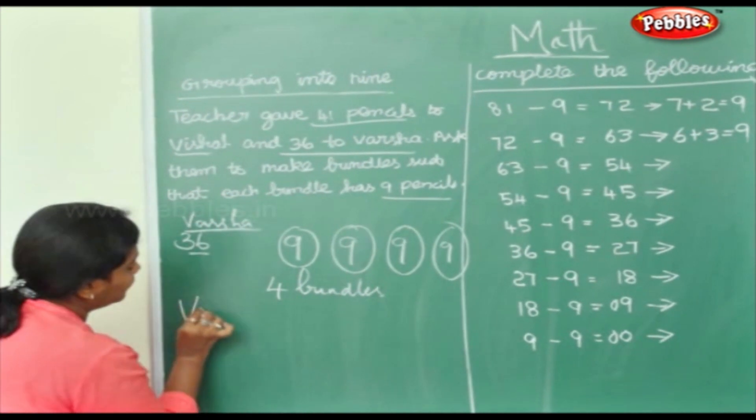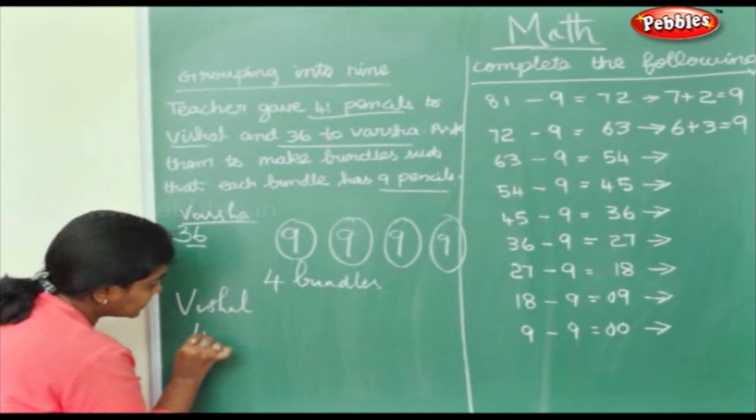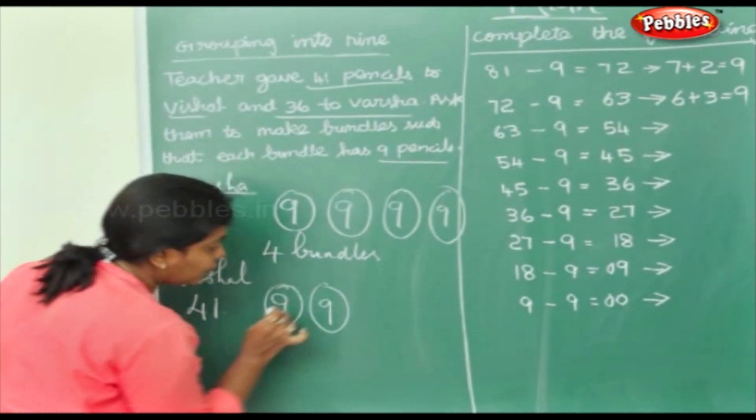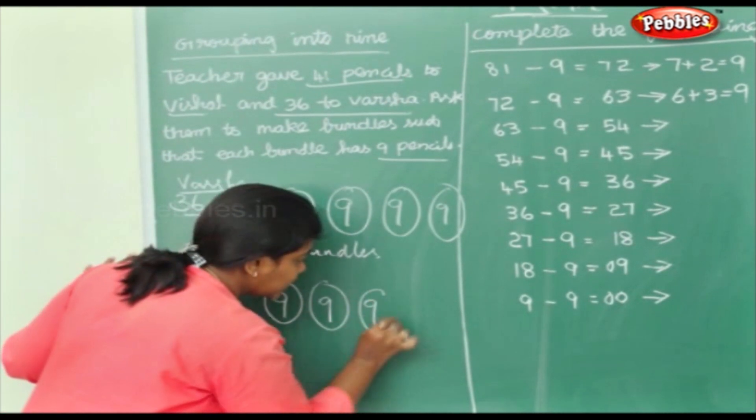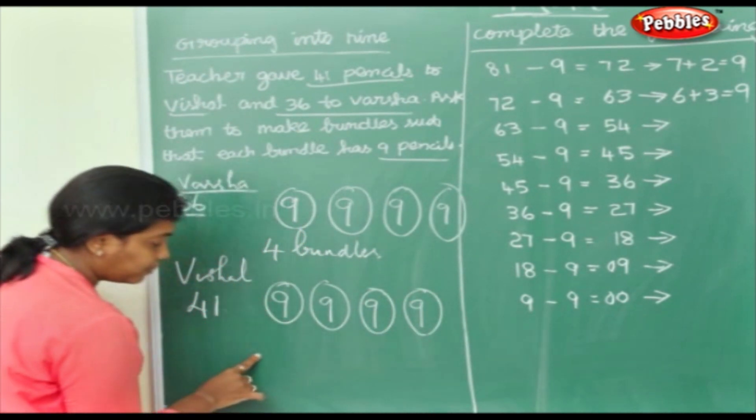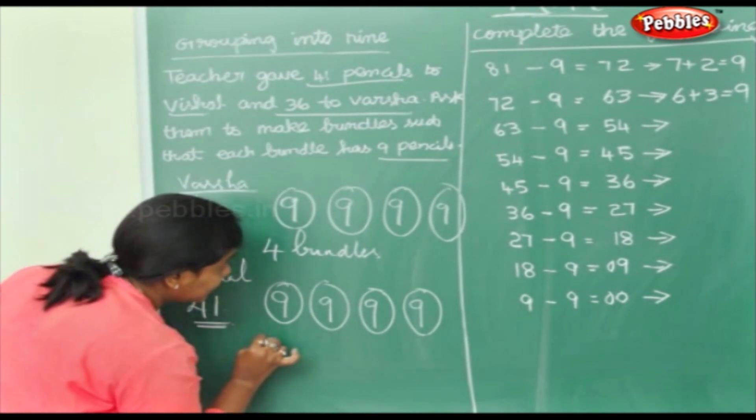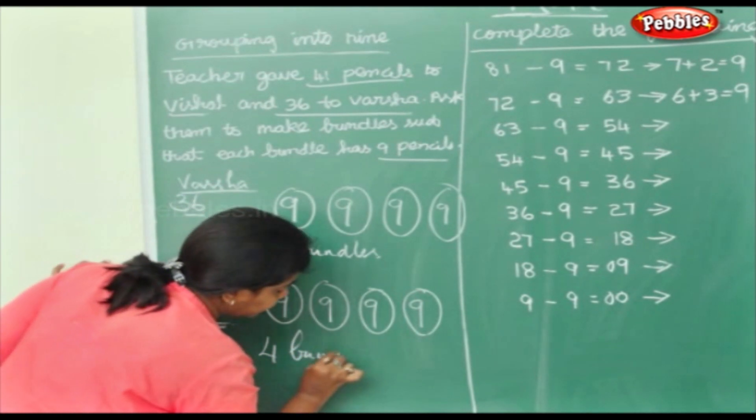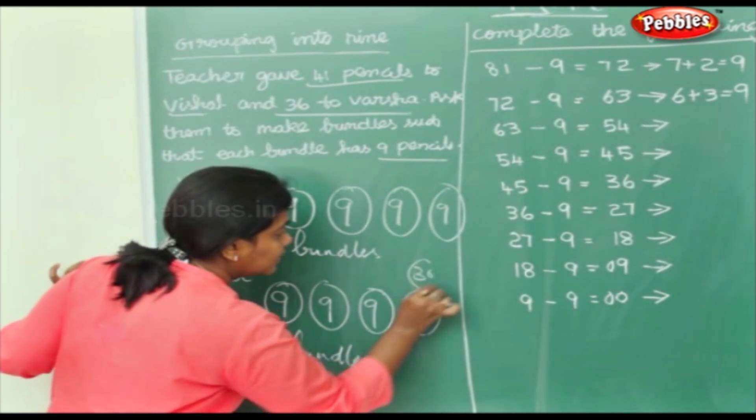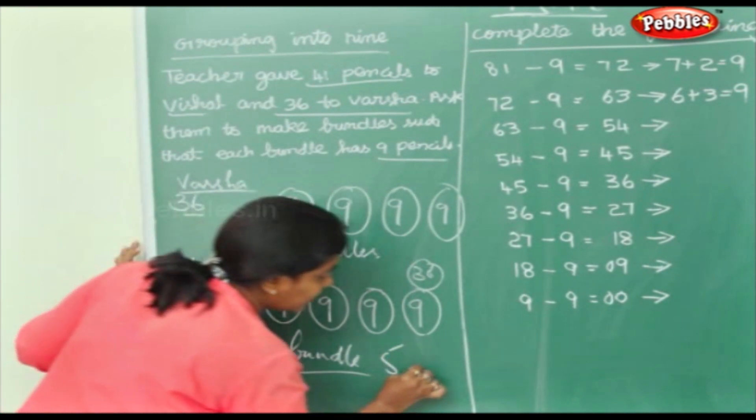Now let's see what Vishal can do. Vishal, he's got 41 pencils. So 1 nine he can make, 2 9's he can make. So he's finished off 18 pencils. 3 9's he can make, 27 pencils are over. 36 pencils are over. If you make another, you will have to make 45 but he has only 41 pencils. So he can make 4 bundles. 9, 18, 27, 36 is already been made. So he has 5 extra pencils. 4 bundles and 5 extra pencils.